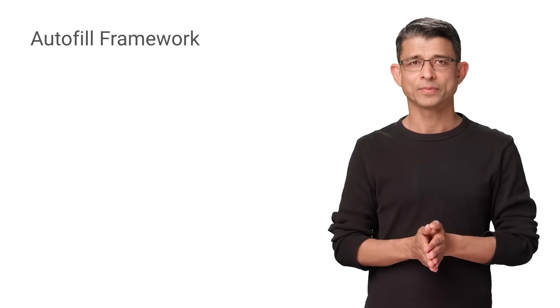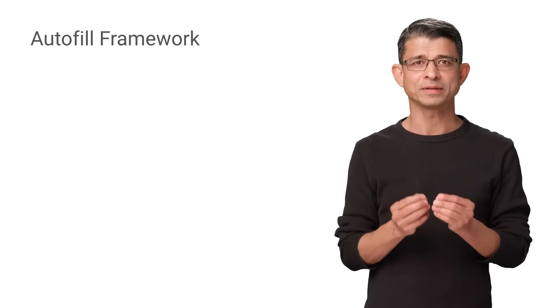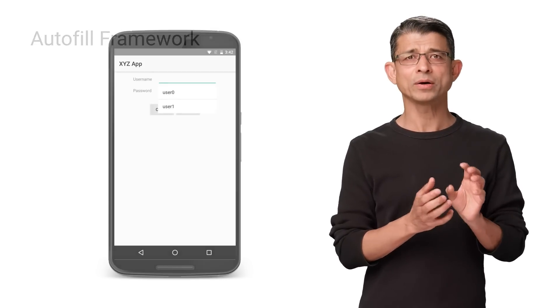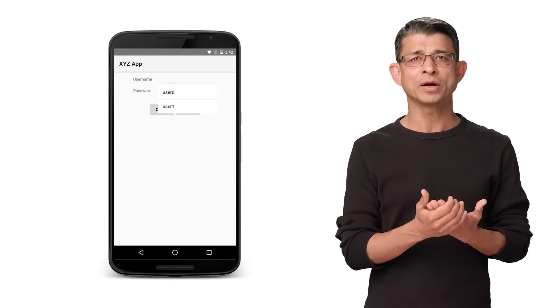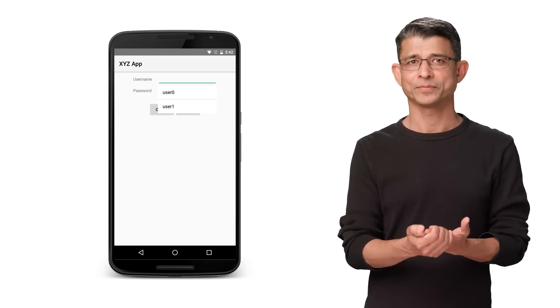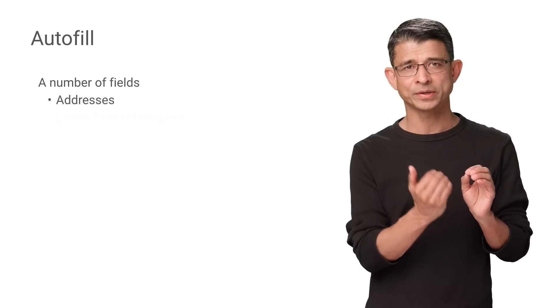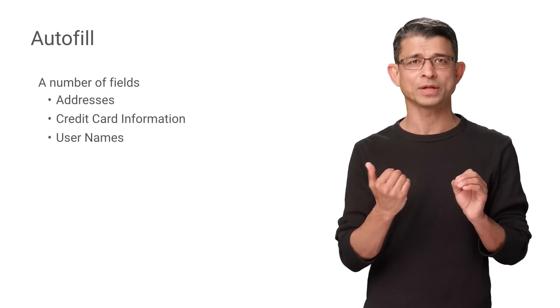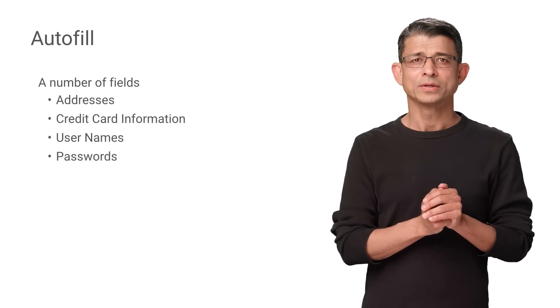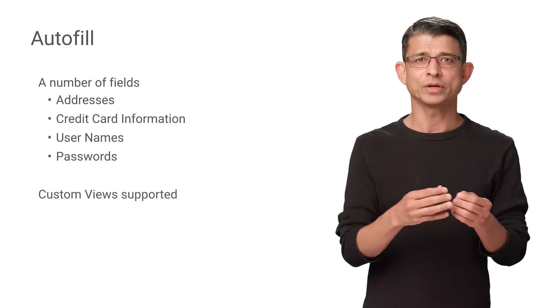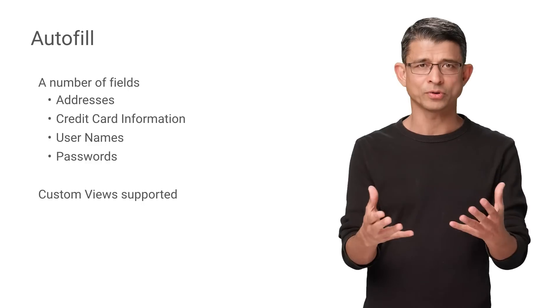Filling out forms is a time-consuming and error-prone task. The new Autofill framework makes it easy for apps to help their users through this. Android O allows users to select an Autofill app similar to the way the keyboard app is selected. The Autofill app is responsible for storing and securing user data, such as addresses, credit card information, usernames, and even passwords. There's also a new View API that you need to implement in custom views to ensure that metadata is exposed to the Autofill framework.